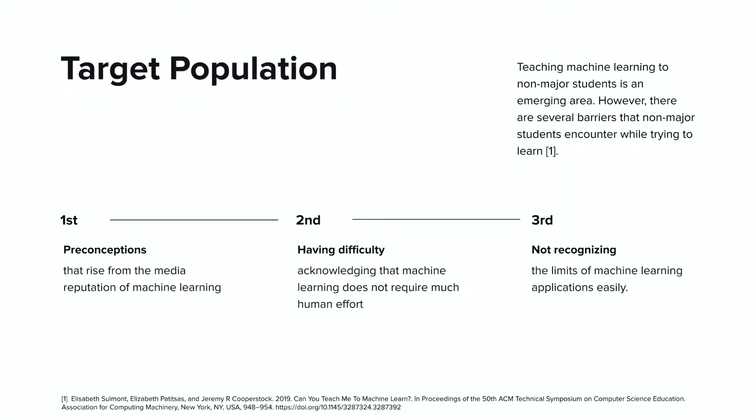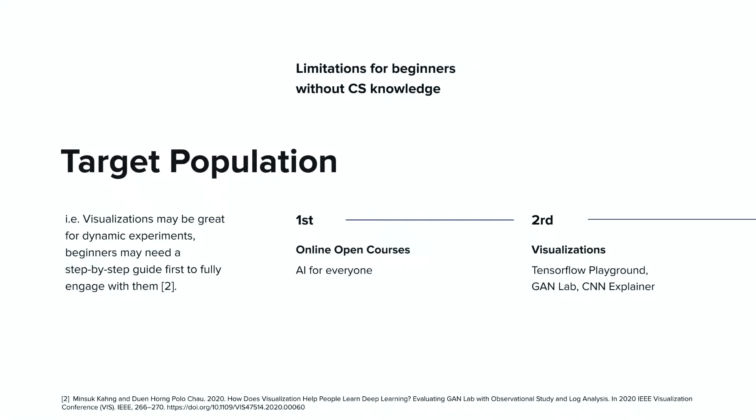Previous literature has investigated several barriers that non-major students encounter while trying to learn. Preconceptions can make learning machine learning seem too difficult, and they may meet difficulties in fully understanding its capacity and limitations. There were efforts towards more interactive education for the general public, such as online courses or visualizations. However, they also have limitations for beginners, so we focused on the game's potential as motivating and easy-to-access learning material for beginners.